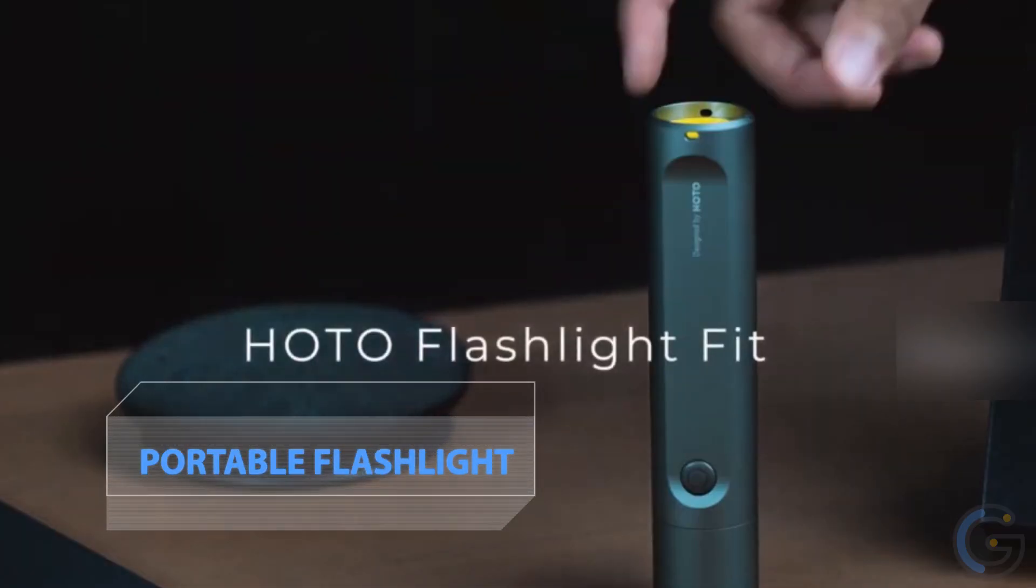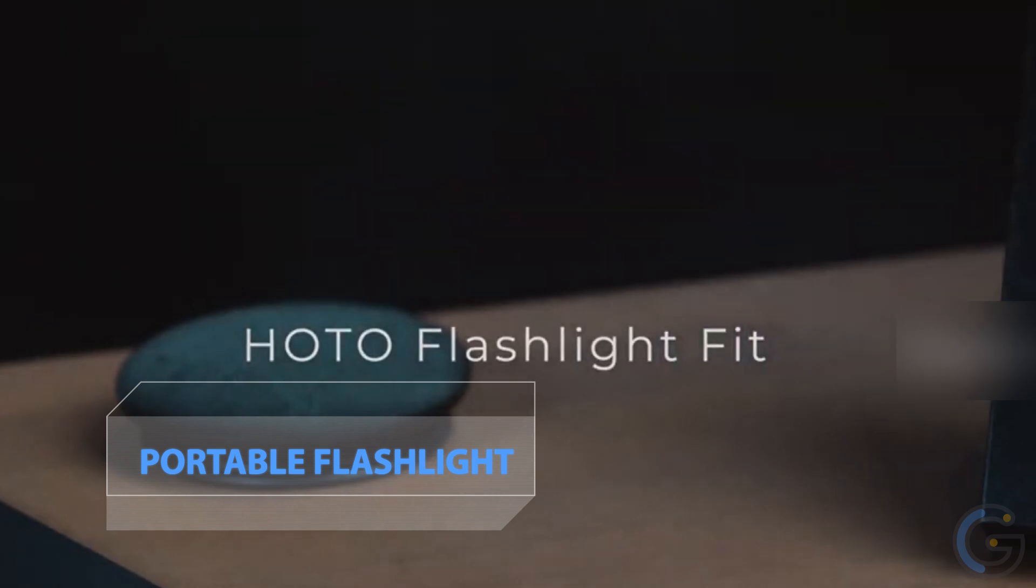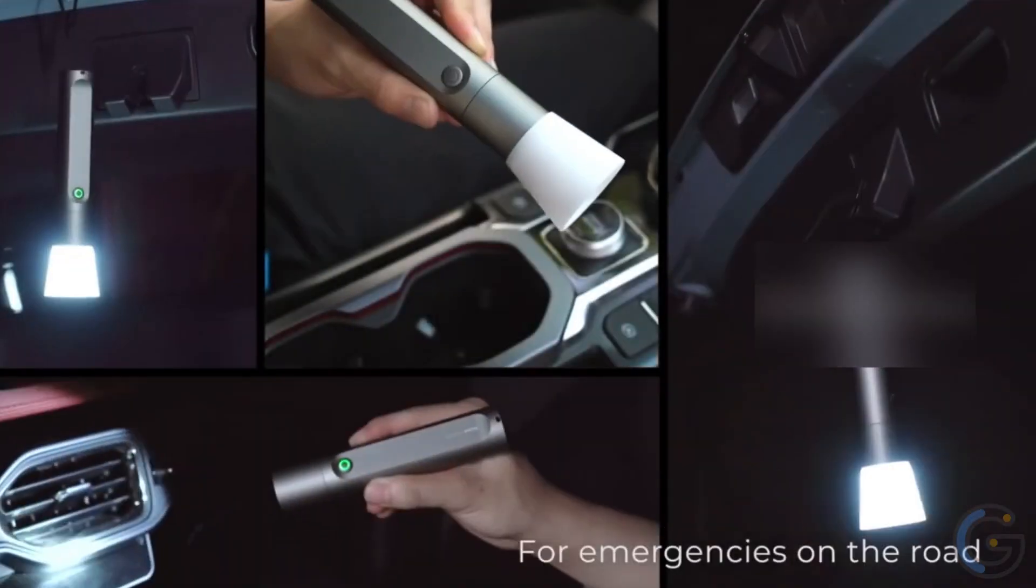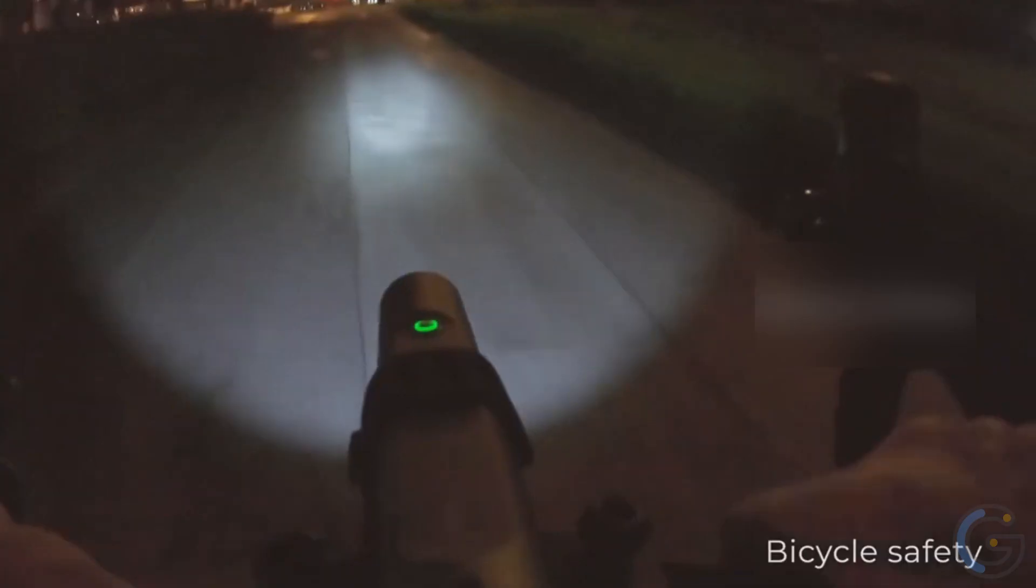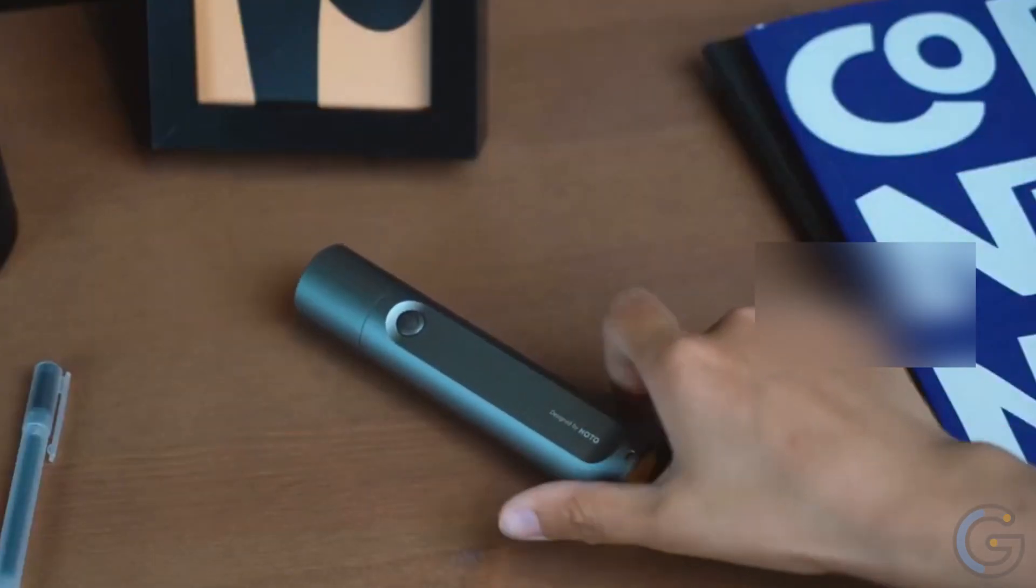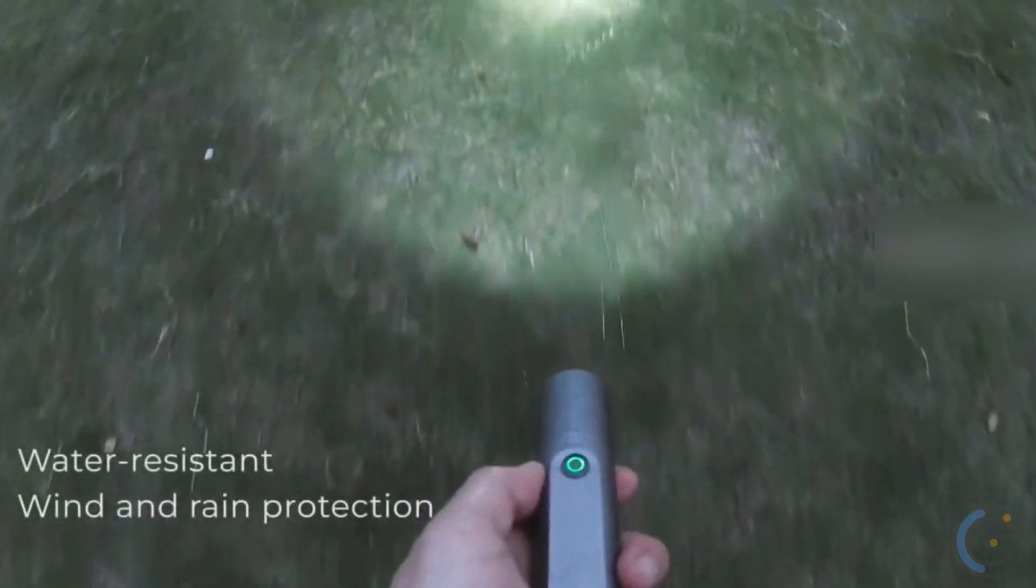HOTO Flashlight Fit 3-Mode Portable Flashlight. Keep a handy tool by your side to help you in the dark. This flashlight flaunts three modes yet has a minimalist design. The outer body has an anodic oxidation treatment. This enables its surface to stay safe from scratches and everyday wear and tear.